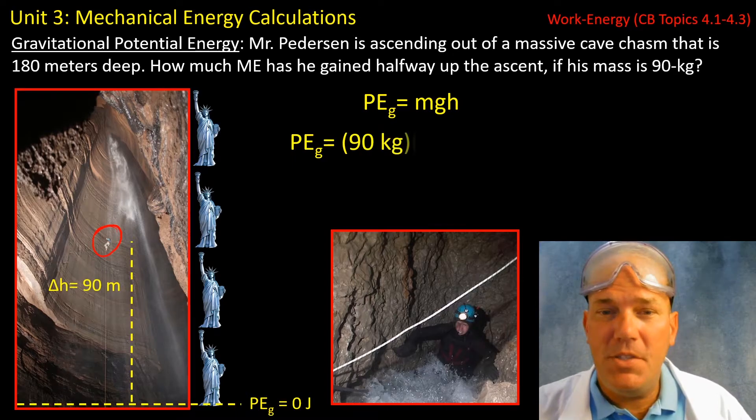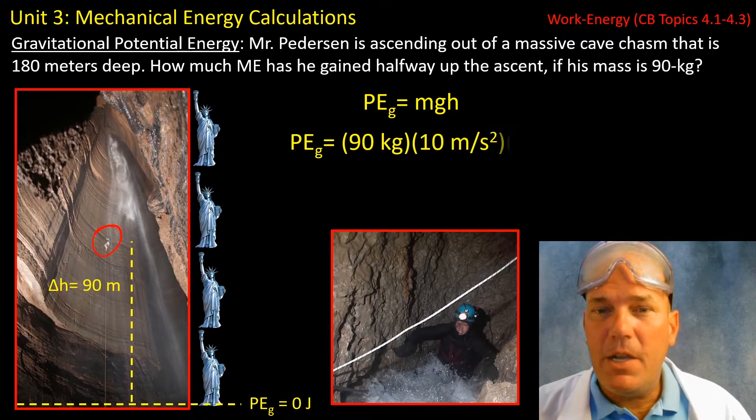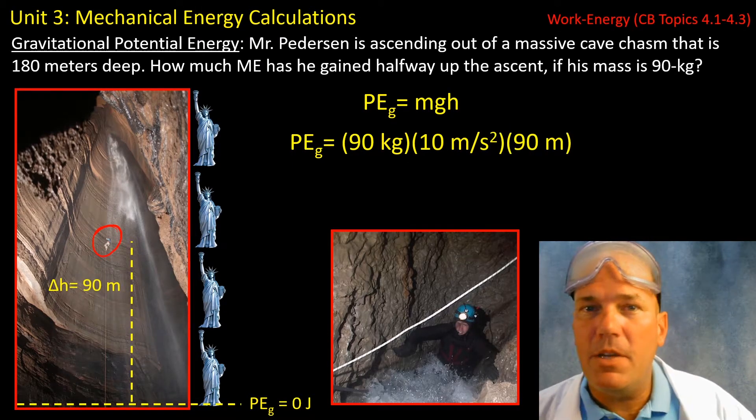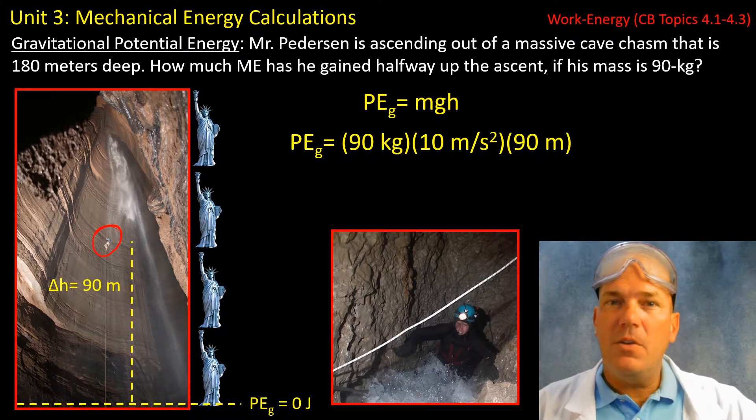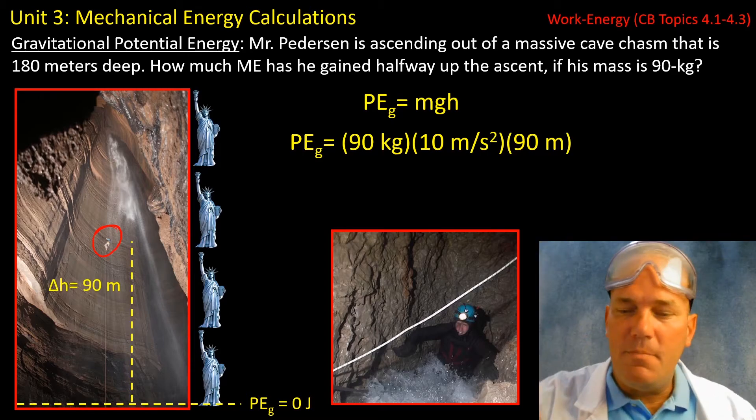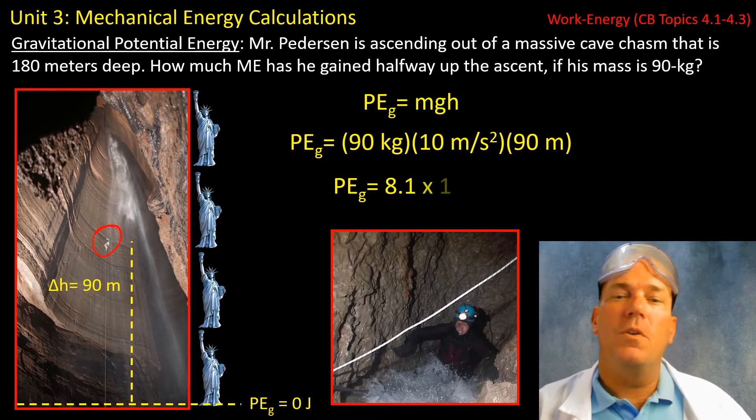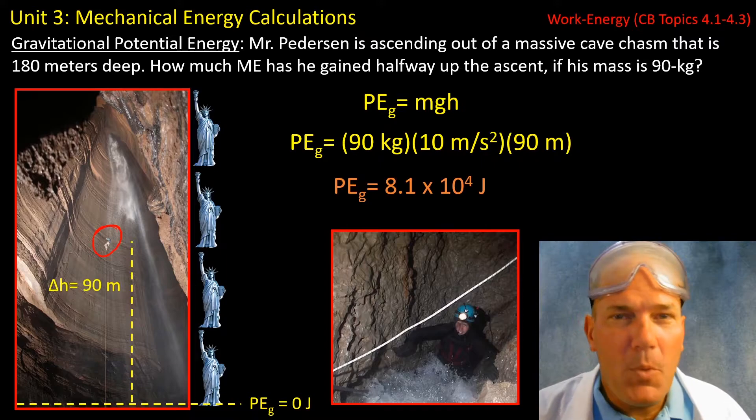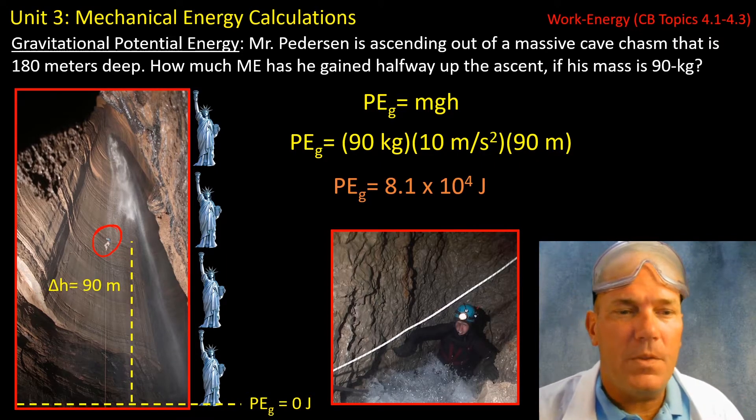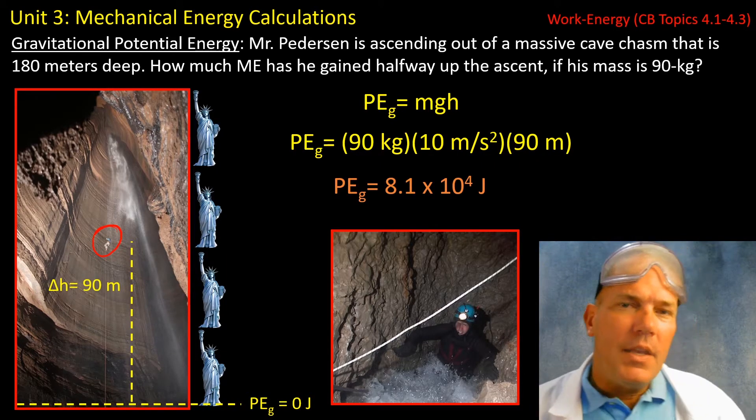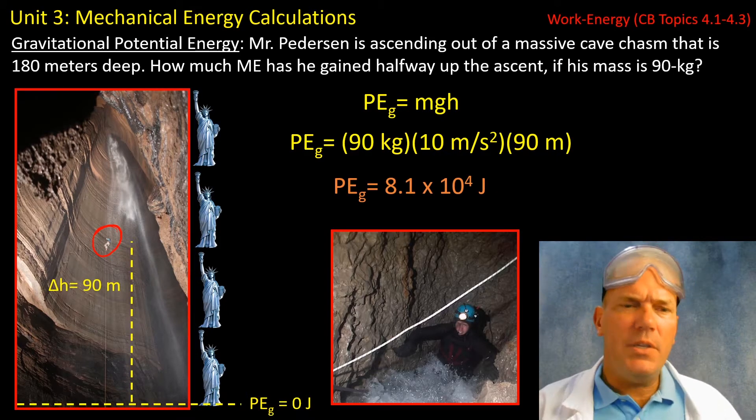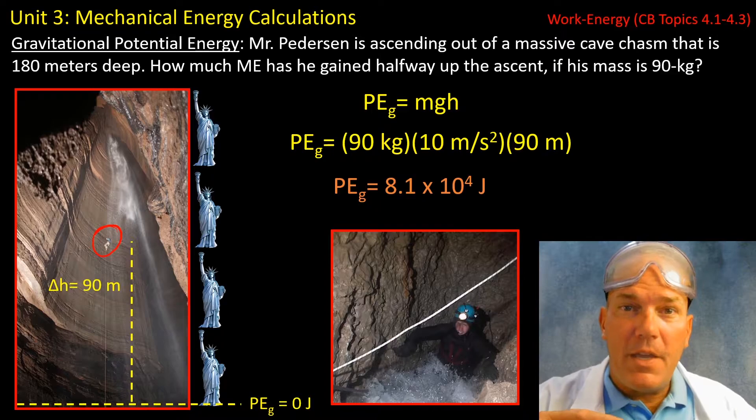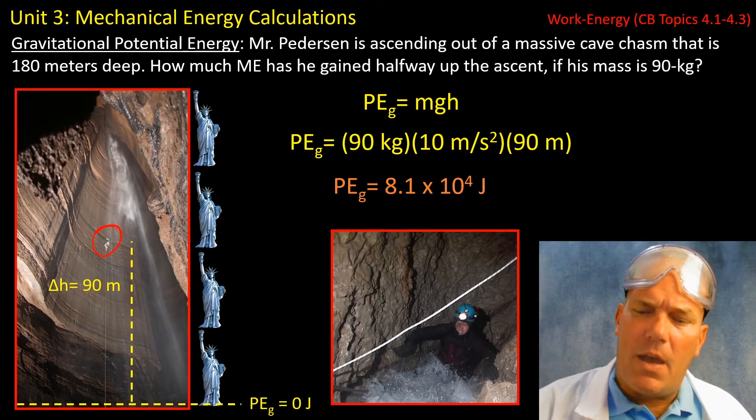Now this is a plug and chug, with 90 kilograms being my mass, the acceleration due to gravity, and of course my change in height from my zero line, I went up 90 meters. That gives you an overall value of 8.1 times 10 to the fourth joules. Now I wonder what would happen if for some reason you chose to put your zero line halfway up the cave. I wonder how that would work out.